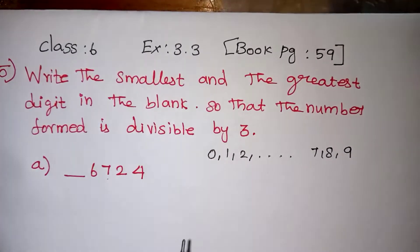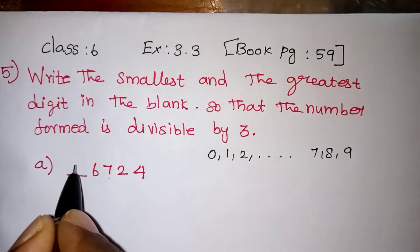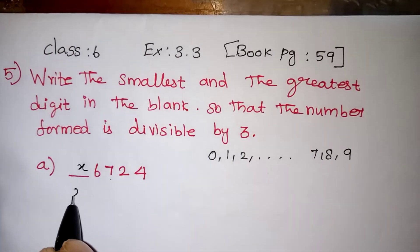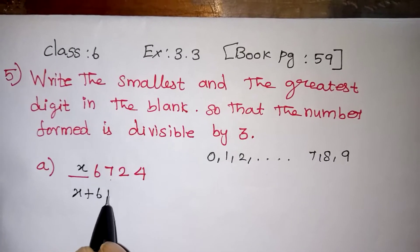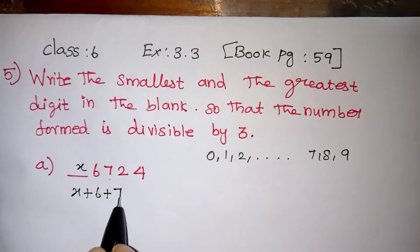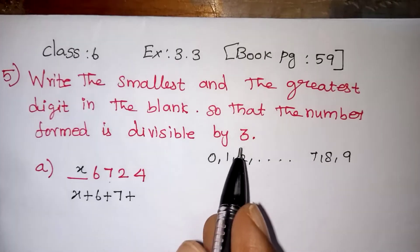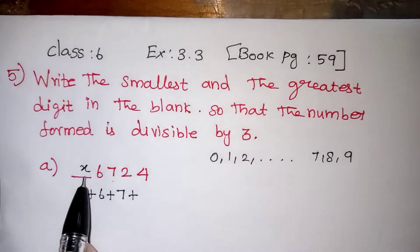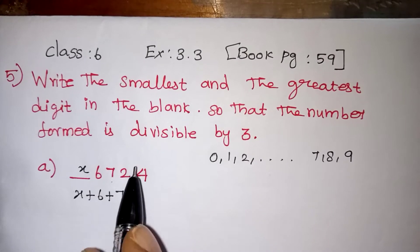So what is the divisibility rule for 3 actually? Let us take this place as x now. If we add all these numbers, the sum should come in the 3 table — that is the rule for 3 divisibility. The divisibility rule for 3 means the sum of all the digits should come in the 3 table.